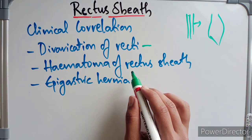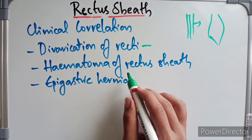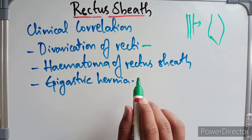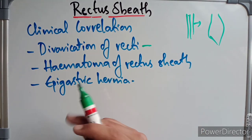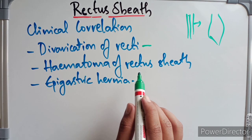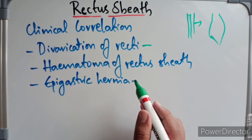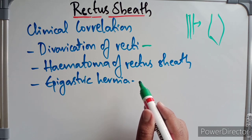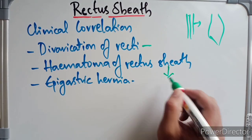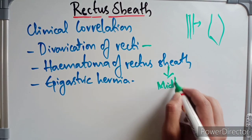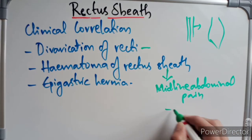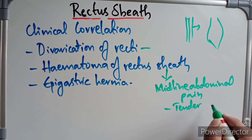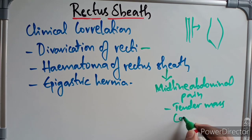Coming to hematoma of the rectus sheath. The inferior and superior epigastric arteries, which are unduly stretched during a severe bout of coughing, can rupture. This causes hematoma of the rectus sheath, which clinically presents as a midline abdominal pain and a tender mass confined to one rectus sheath.